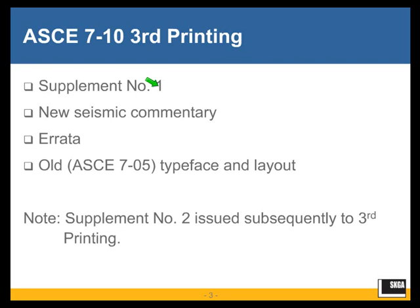More errata were picked up — errata found since the publication of the second printing. Finally, we also went back to the typeface and layout of AC705. Most of you must have noticed that as we went from AC705 to AC710, the first or second printing, the thickness increased. That was not so much because a lot of material had been added, but because the layout and typeface were different. In the third printing we brought the typeface and layout of AC705 back, so despite the addition of many pages of new seismic commentary, the thickness actually came marginally down from the second printing to the third printing of AC710.